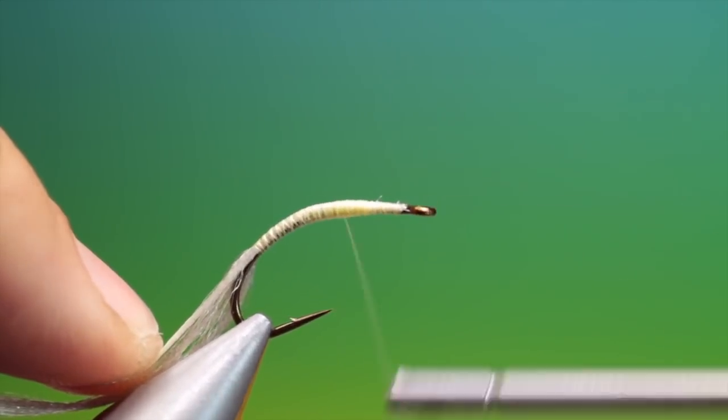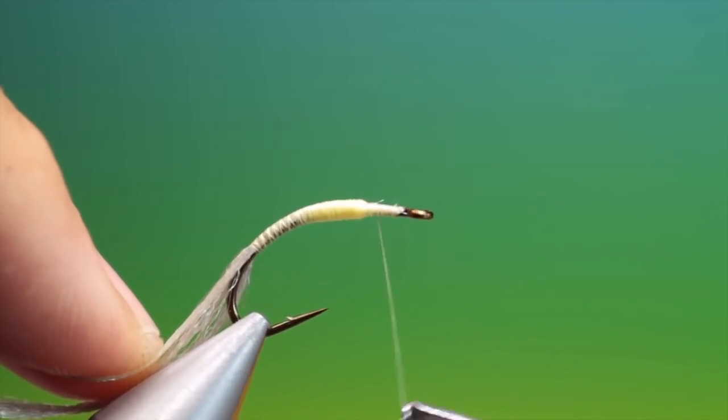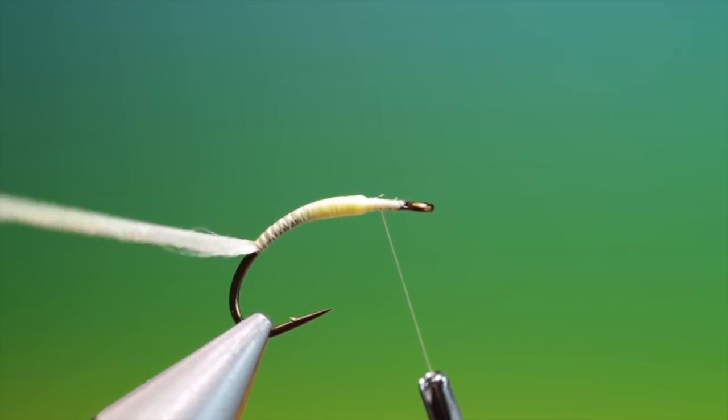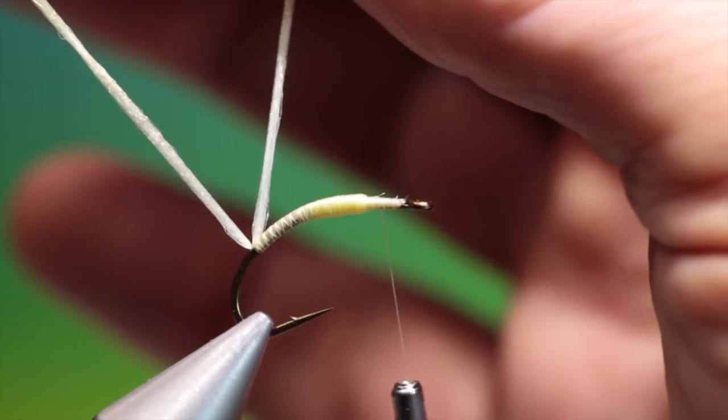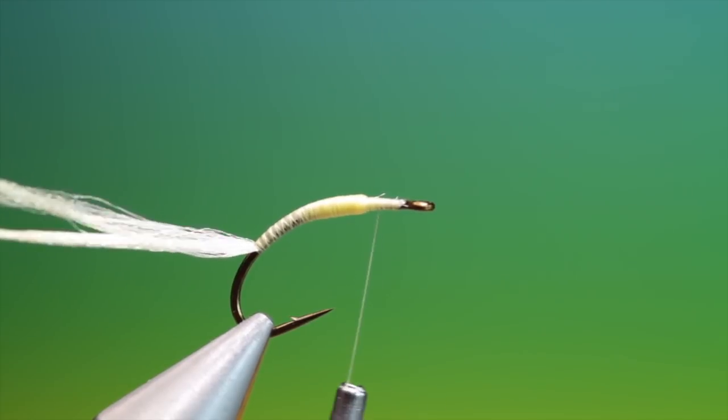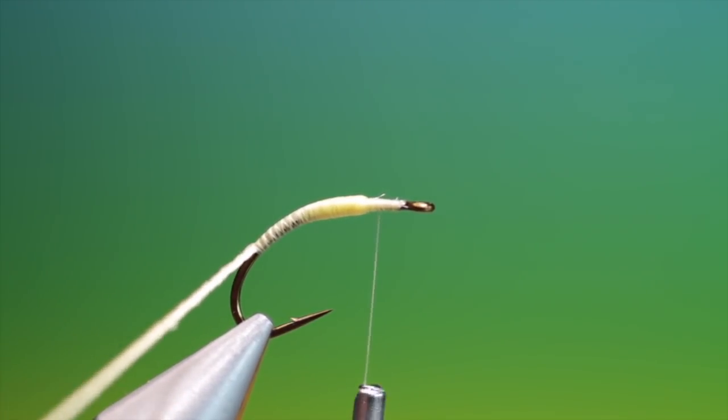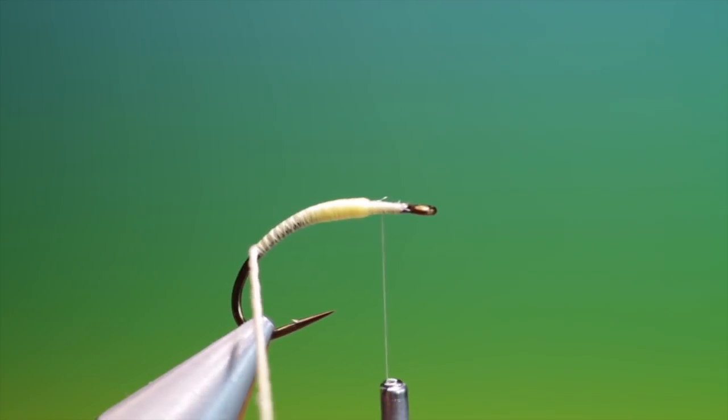Just work on that a little bit. There we are. Let's finish that off there, there's the two yarns. We need a heavy dubbing spinner because we have to spin this very tight. We'll spin this up.